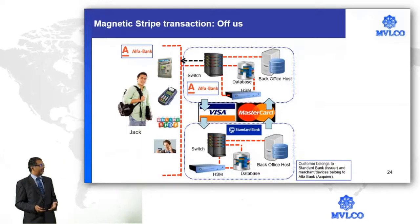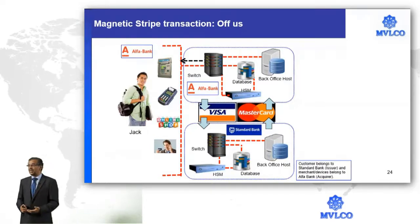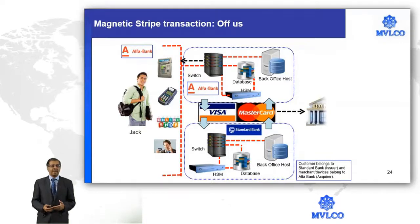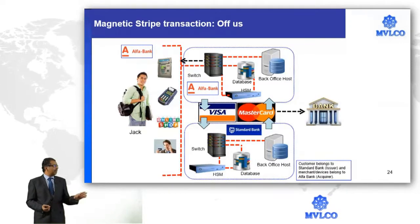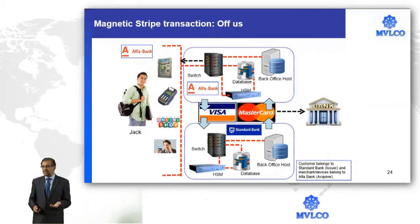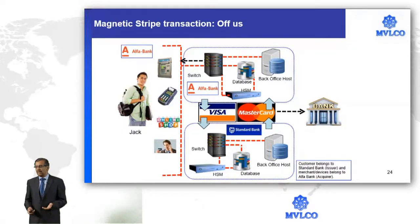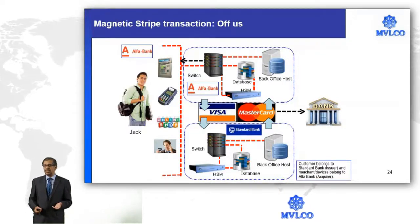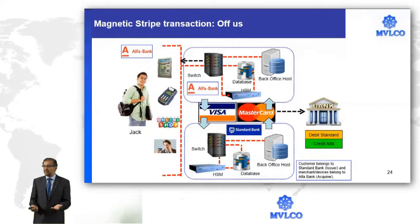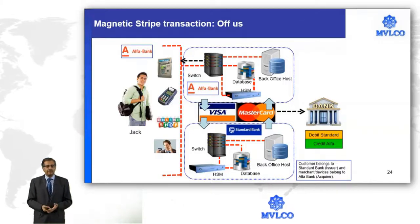Once the obligation calculation is done, the bank having a payable position will need to fund their account at the settlement bank. This settlement bank is one at which both Alpha and Standard will have their accounts. Once the amount is funded, we move the money from one bank to the other — at the settlement institution, we debit Standard Bank's account and credit Alpha Bank's account. The last step of settlement is completed by the clearing system.